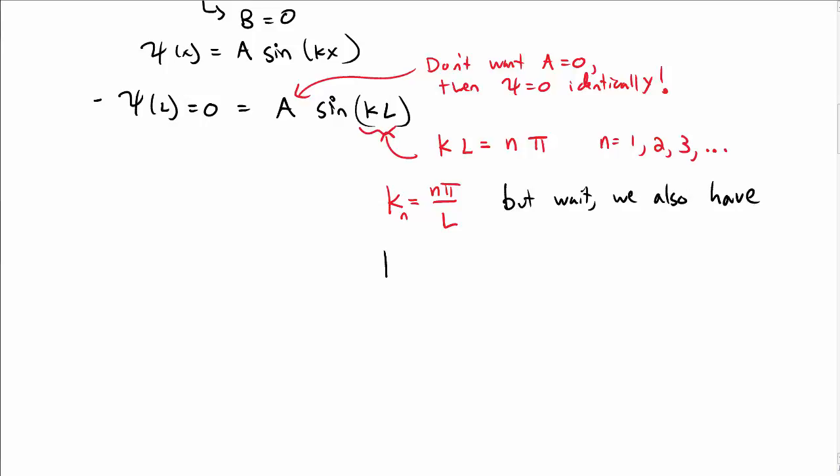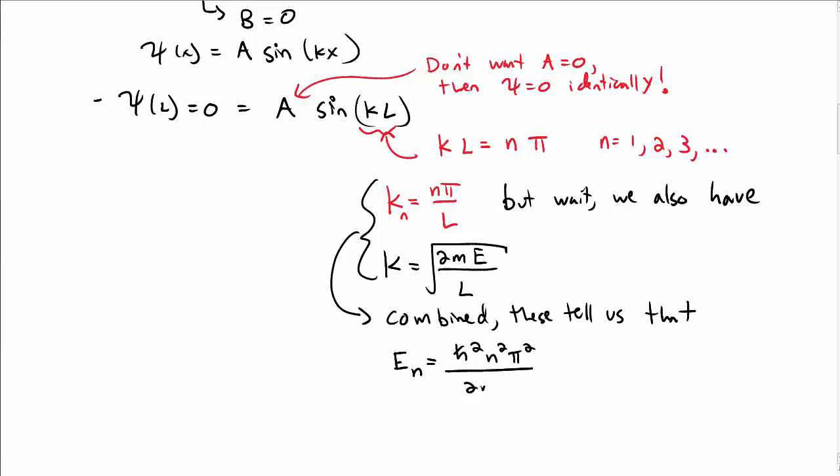But we also have an expression for k: k equals the square root of 2mE over h-bar squared. If we combine these two, then we find that the allowed energies are E_n = h-bar squared n squared π squared over 2m L squared.